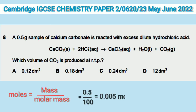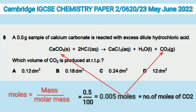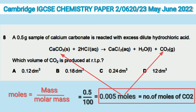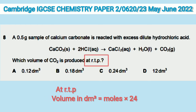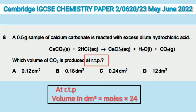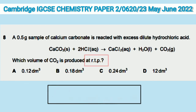So moles of calcium carbonate = 0.5 ÷ 100, which comes to 0.005 moles. The number of moles of carbon dioxide produced will also be 0.005. Now we have to convert these moles to dm³. That is simple — we just multiply by 24 to get the volume in dm³. An important thing to remember: at RTP, moles × 24 gives volume in dm³.